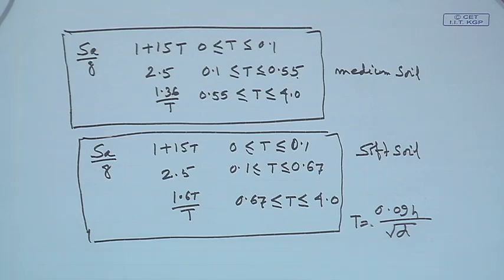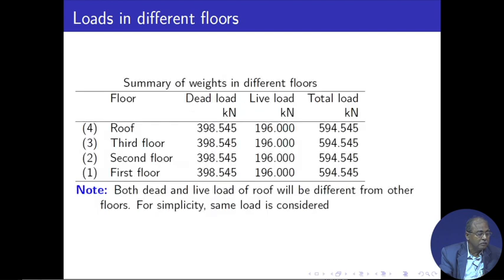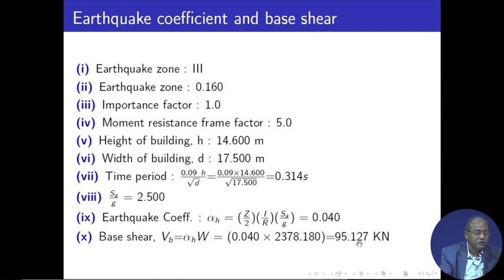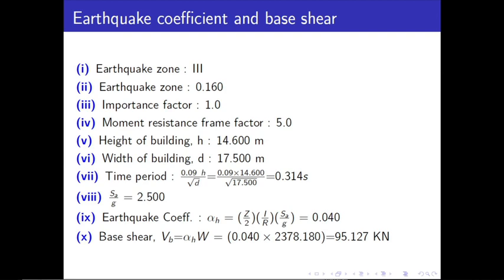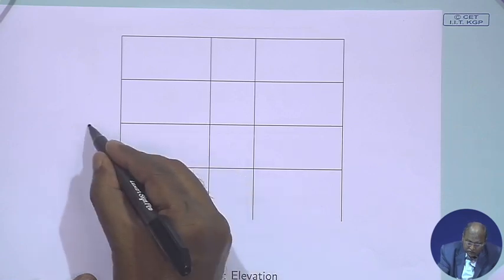So Ah = Z/2 × I/R × Sa/g = 0.04. Therefore, VB = Ah × total load = 0.04 × load = 95.127 kilo Newtons. This is the total lateral load, also called the base shear, which needs to be distributed along the height.